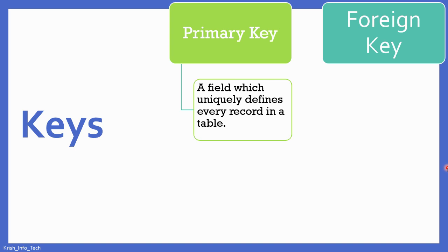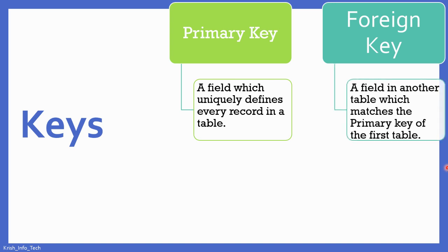When combining the whole school bio data, it is not possible to identify who is roll number one, because all classes and all sections have roll number one. To avoid this, we are going to have one unique field, maybe the admission number. The admission number is a unique value in each and every student's record — that's the primary key. The primary key of the first table is going to be called a foreign key in the second table.